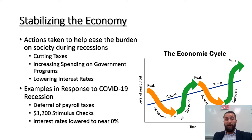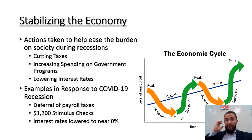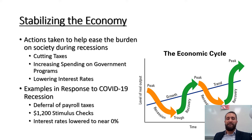The government addresses this through a couple of methods currently being used during the COVID-19 recession. First, cutting taxes — you can see this with the deferral of people's payroll taxes, including Social Security and Medicaid taxes on businesses and individuals. Second, increasing spending on government programs — we see this with the $1,200 stimulus checks as well as the increased unemployment benefits being provided. You don't normally see that during a regular economic period, but because we're in an economic downturn, government has to take these actions.